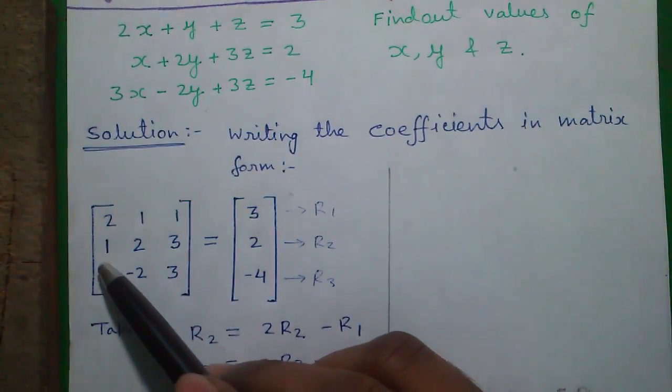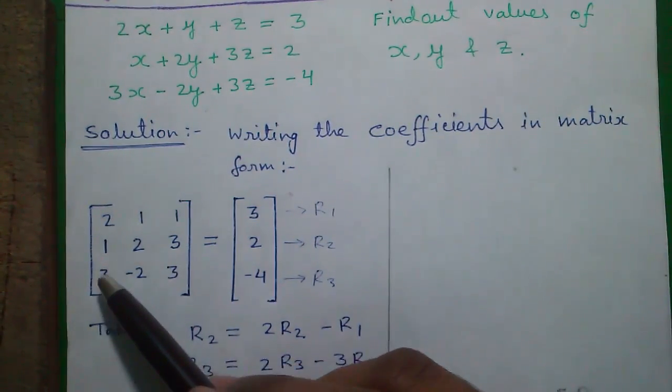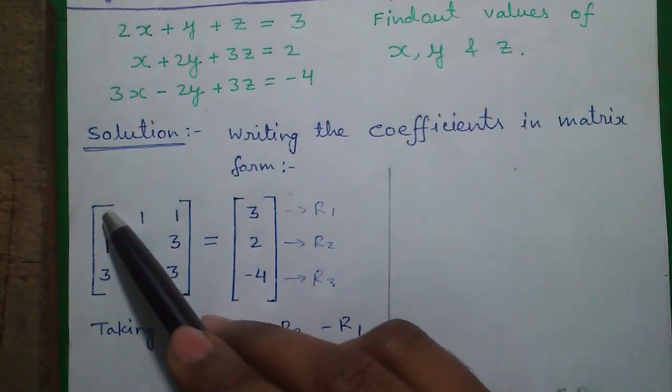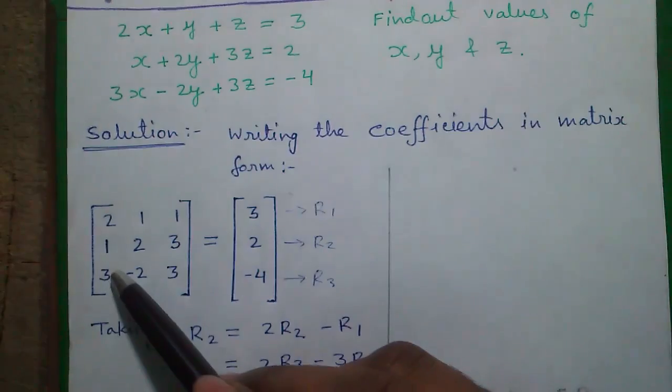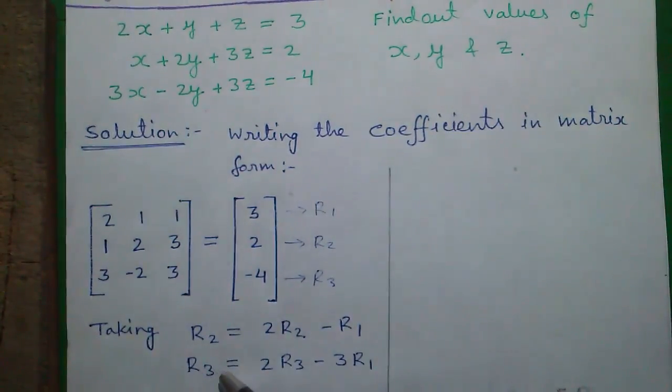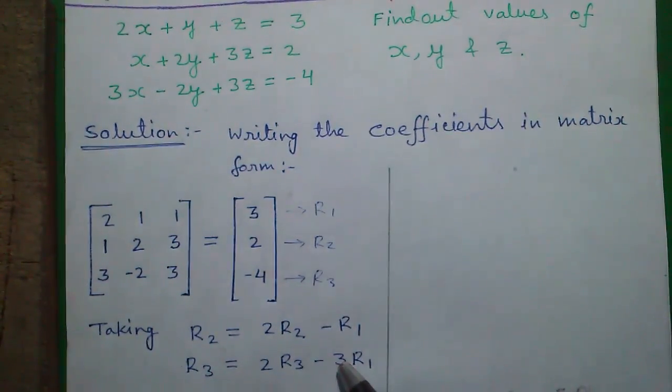And for R3, we can multiply this by 2, we will get 6 and this by 3, so we will get 6. So we can subtract that from this. So we will get R3 equals to 2R3 minus 3R1.